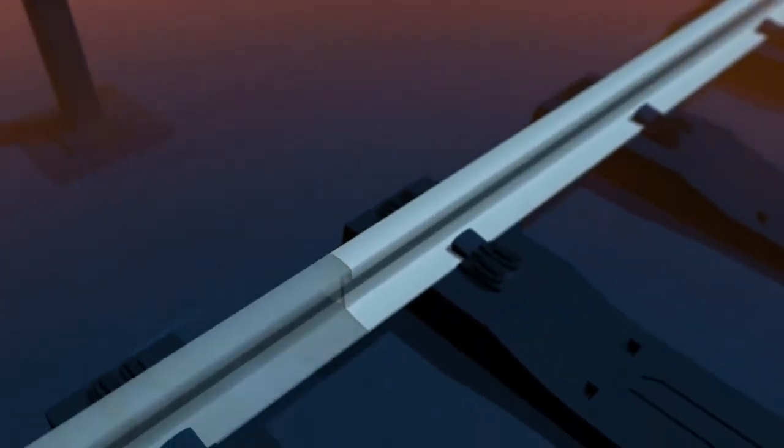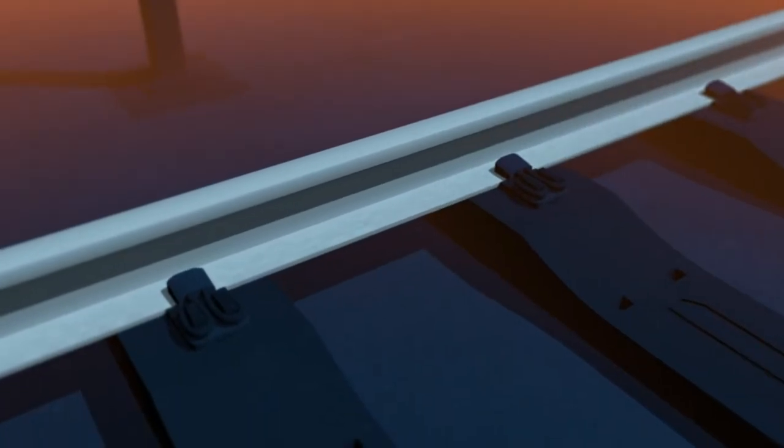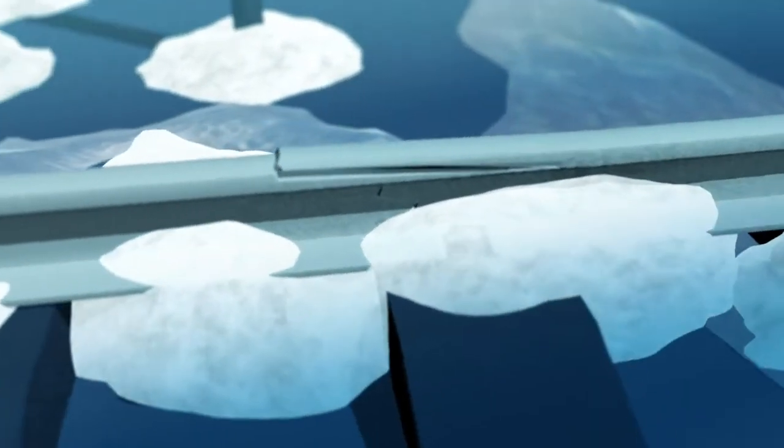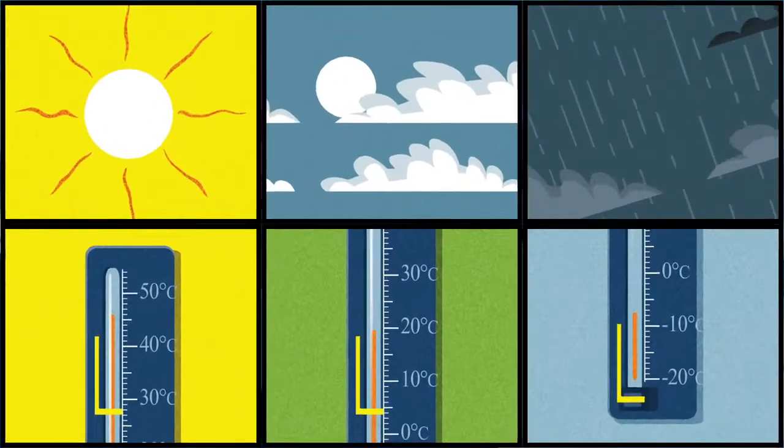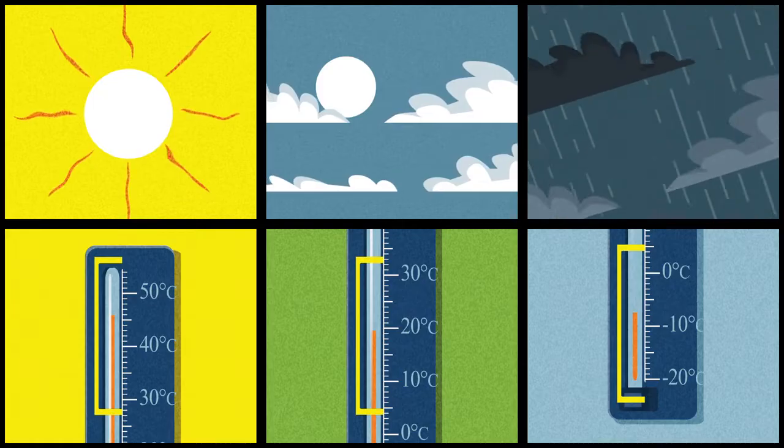If we stressed our rails for exceptionally hot weather, they wouldn't be safe for the winter, and we'd have broken rails because it's too cold. That's why other countries choose different temperature ranges depending on their climate.